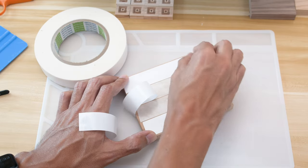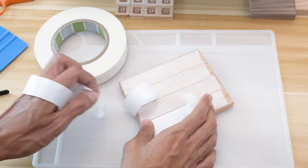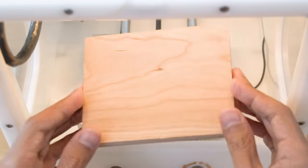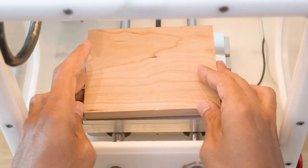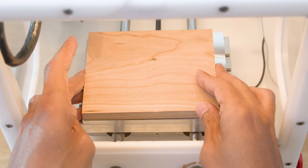To secure the stock to the bed, I like to use double-sided Nitto tape. When placing the material down, I have to make sure to align it to the lower left corner since that's how we set up the coordinates in Fusion 360.